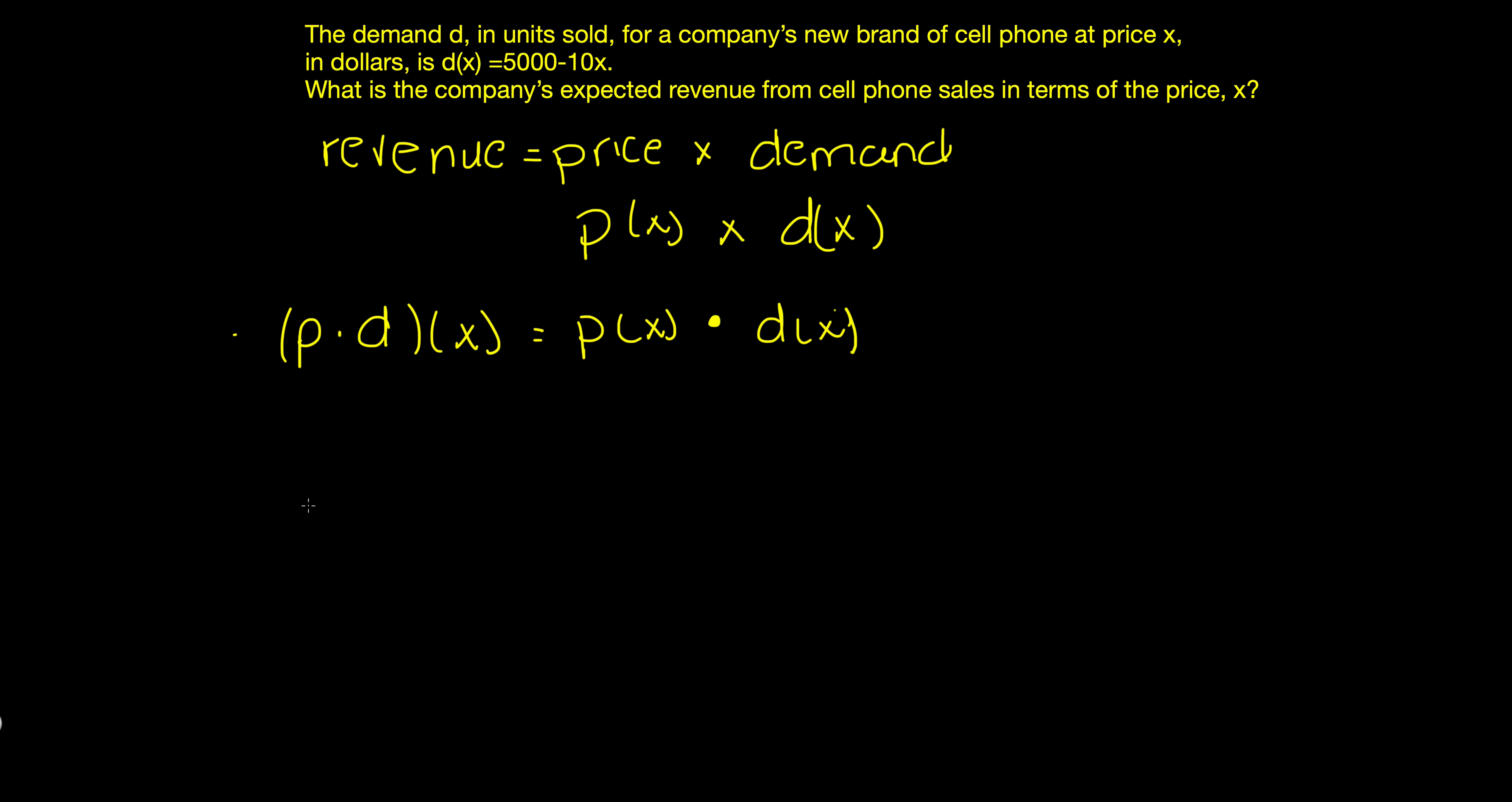Now just using substitution, p(x) in our case is going to be x because x is the price of the cell phone. So now substituting in we now have x times 5,000 minus 10x.